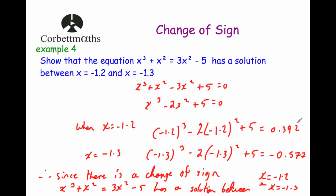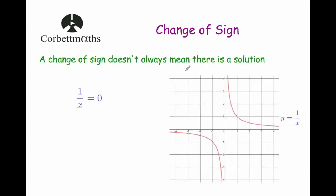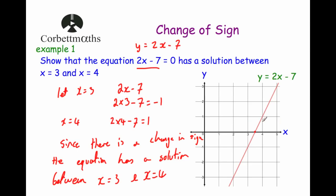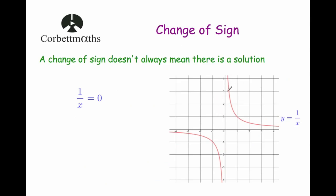There are some situations where the change of sign can encounter difficulties. First, a change of sign doesn't always mean there's a solution. If the graph is not continuous — for example with 1 over x — substituting a value just left of zero gives a large negative value and just right of zero gives a large positive value, so there's a change of sign, but the graph doesn't join up and there's no solution at x equals 0. If the graph is not continuous, you must be careful when using change of sign.